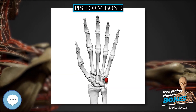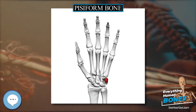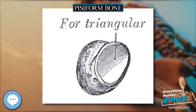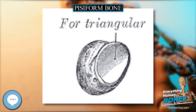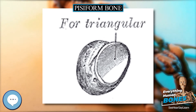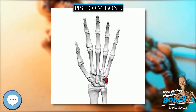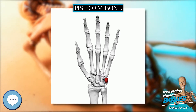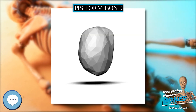The pisiform bone, also spelled pisiform, from the Latin pisi-formis, meaning pea-shaped, is a small knobbly sesamoid bone that is found in the wrist. It forms the ulnar border of the carpal tunnel.